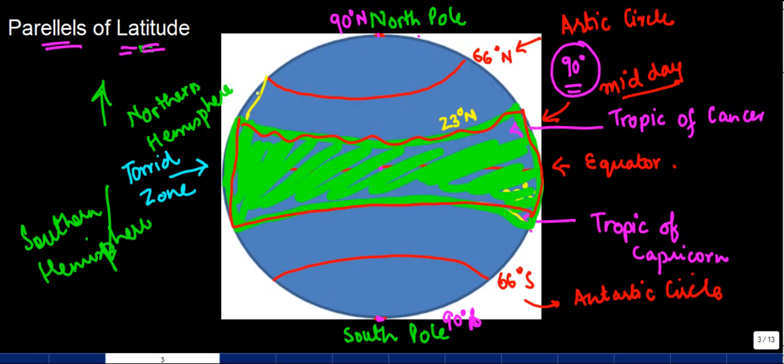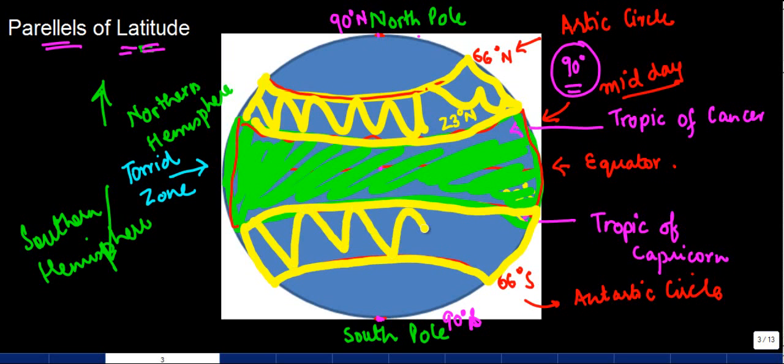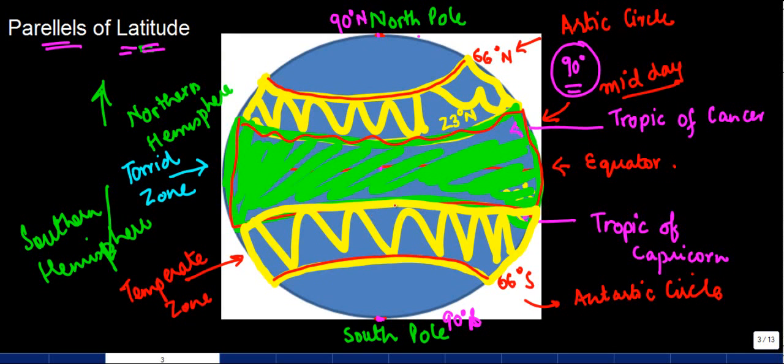Now, coming to the next one, which is the area between 23 degrees and 66 degrees North, which is this one, and 23 degrees South and 66 degrees South, which is this one. This is known as the temperate zone, and here the sun is not exactly overhead but the angle keeps on decreasing. As you move away from the equator, the impact of the sun rays keeps on decreasing.